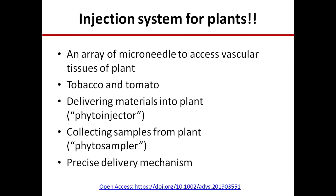The next topic is an injection system for plants. A group of researchers developed a type of injection system for plants, experimenting with tobacco and tomato. This injection system is basically an array of micro-needles designed to access the vascular tissue of the plant. Once planted on the plant, this injection system can be used to deliver materials directly into it.